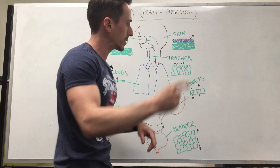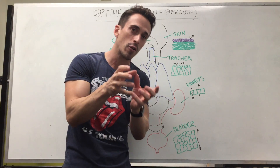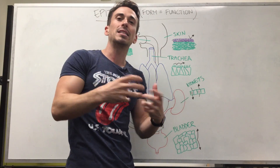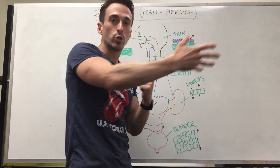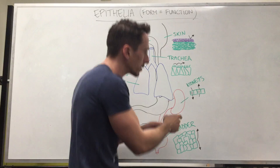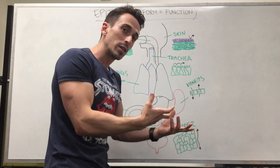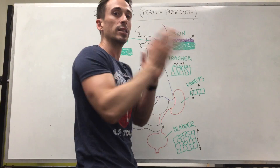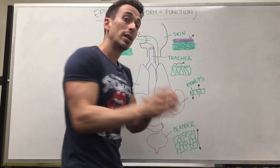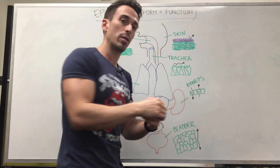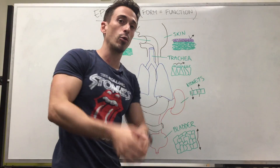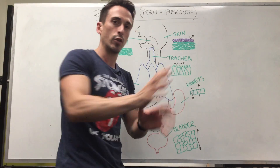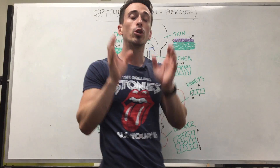Now let's look at the kidneys, specifically the nephron. The nephron consists of convoluted tubules within the kidneys that can selectively absorb or reabsorb components from what's been filtered, and return them to the blood. It decides: do I want to excrete this or throw it back into the blood? To do this, it uses simple cuboidal epithelia — one layer so things can pass through, and cuboidal because it processes things and moves them in or out. So the nephron of the kidneys contains simple cuboidal epithelia.